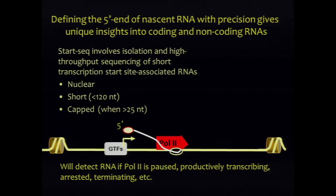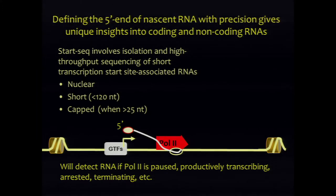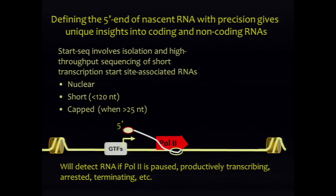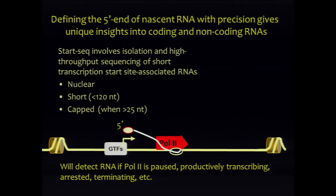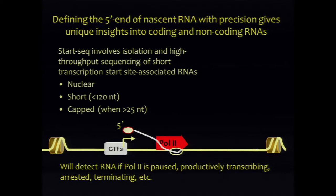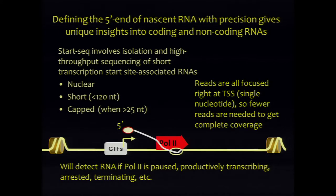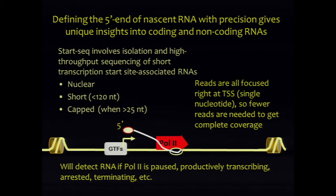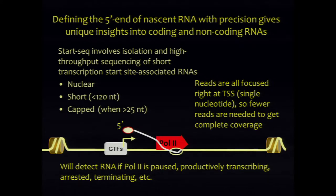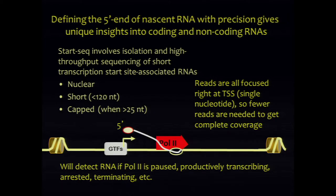The nice thing about START-seq is that you don't require the polymerase to incorporate another nucleotide — so you can get these RNAs even if the polymerases are not stably paused, whether they're actively transcribing through, arrested in transcription, or in the process of termination. You can get these short RNAs from wherever transcription is initiating. Because all these reads are focused at the five-prime end, you don't need a billion reads to cover your sequence space.